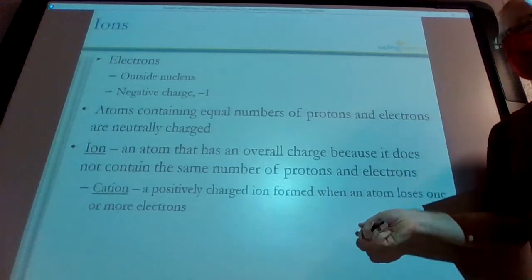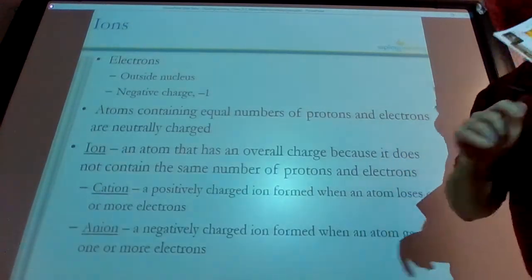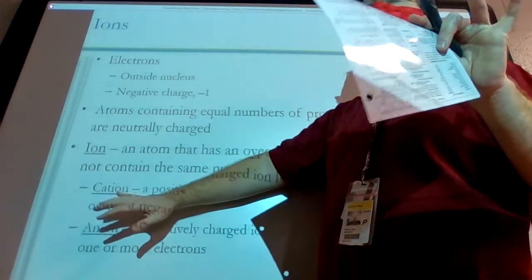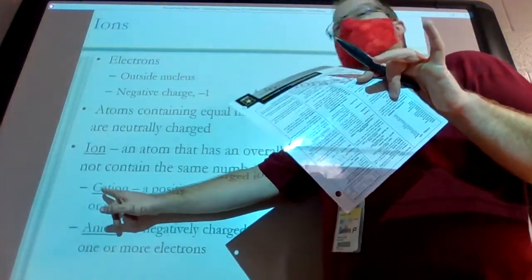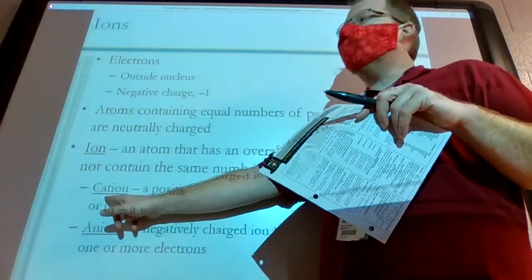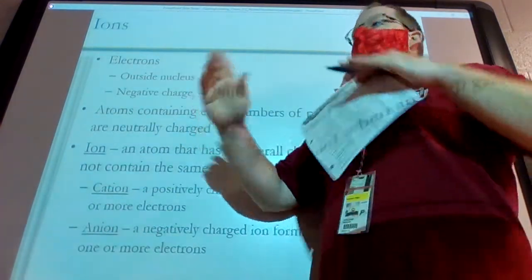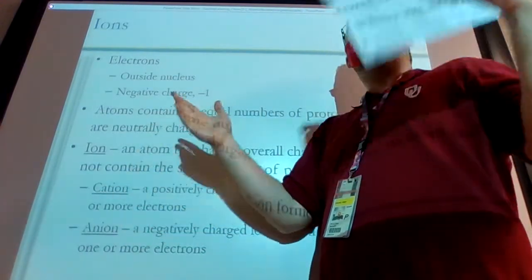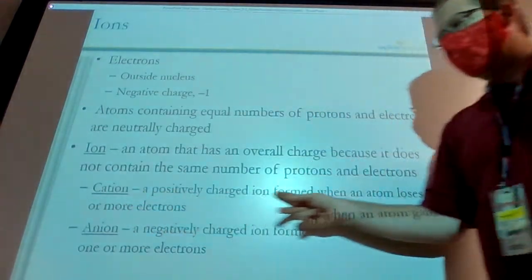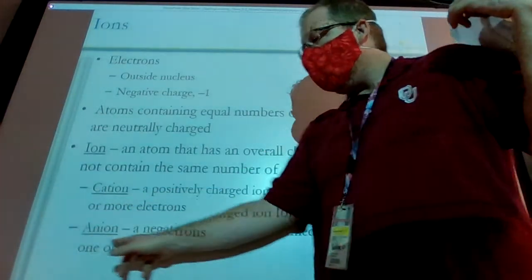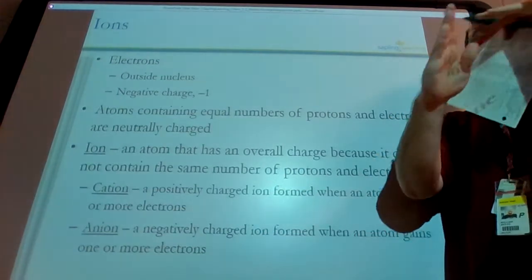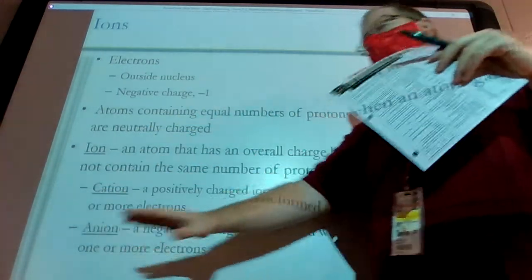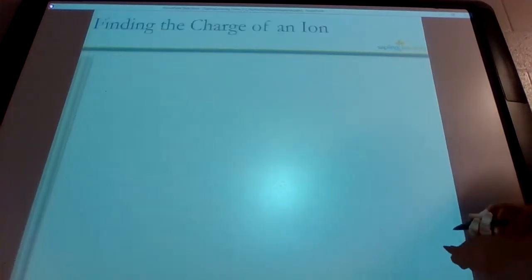So we have two different names here, cation and anion. These describe whether you have a positive charge or a negative charge. The best way to remember this, cation has a T. And what does T look like, positive or negative? T looks like a plus sign. So the word that has a T in it is going to be for your positive ions. Cations are positively charged. Anions are negatively charged. And so if you can remember that the T looks like a plus sign, cation is positive. And the other word is anion. That's going to be your negative one.